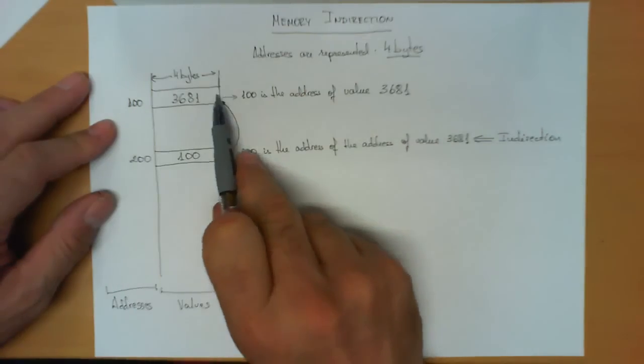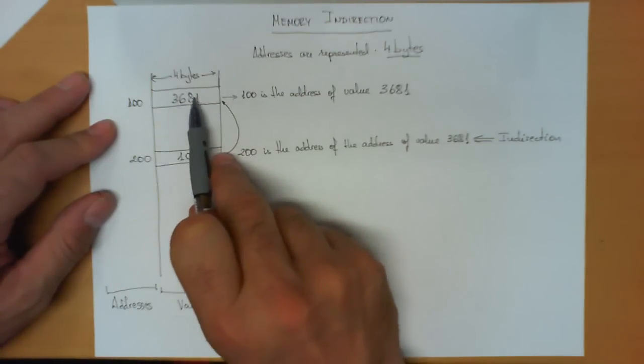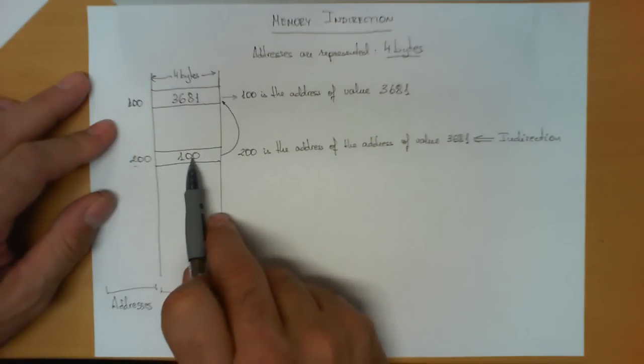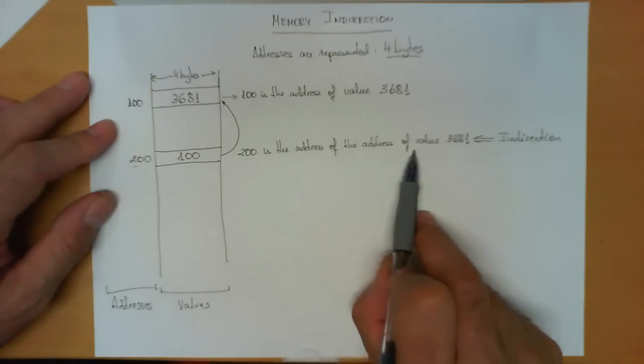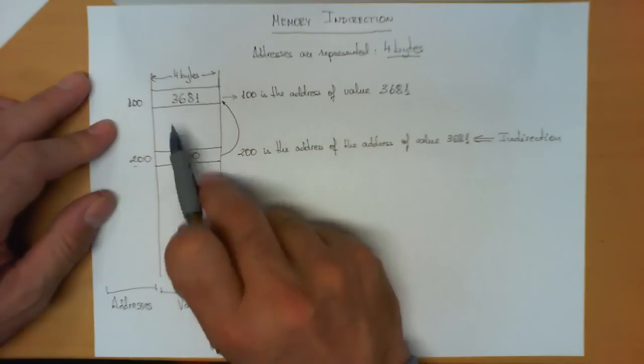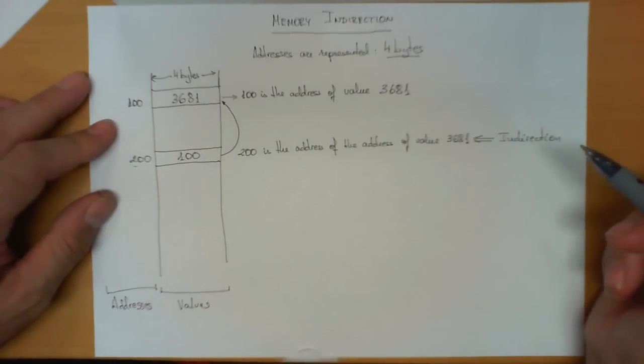Instead of accessing directly 3681 in this position 100, we go first to position 200, and what we find there is not the data, but the address of the data. And we make the indirection, and we go to the final destination in which we find the data. This is what is called an indirection.